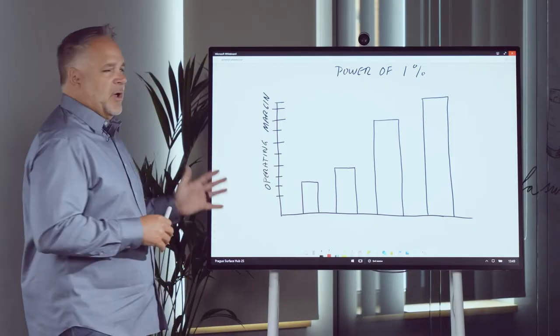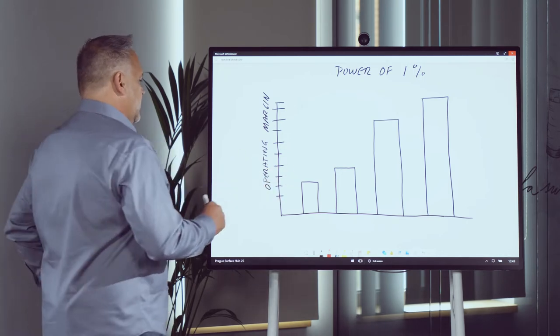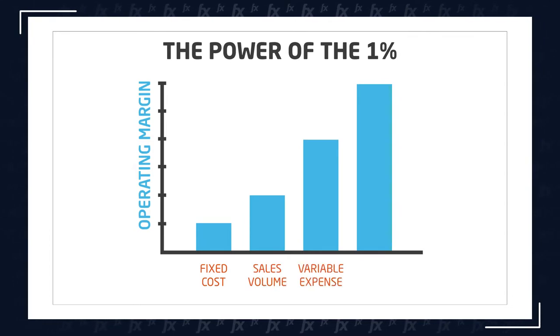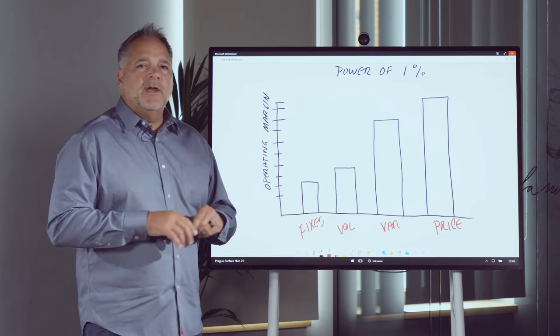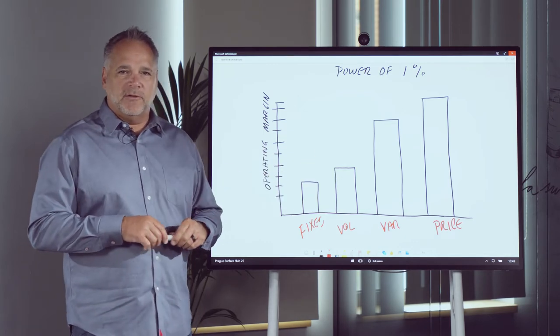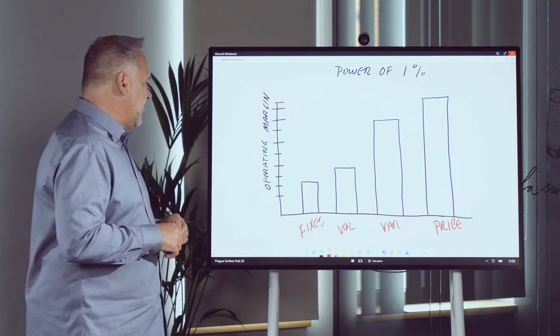So I've set up on my board here a representation of the four major operating drivers which are fixed cost, sales volume, variable expense, and price. You can see by just illustration here of the graph that the impact on operating margin for each of these is tremendously different. But the concept here is pretty simple. It says if you're able to get a 1% improvement of any of these operating margins, this is their effective impact across your organization on your operating margin.